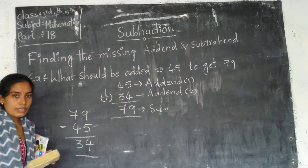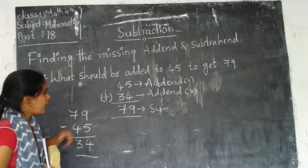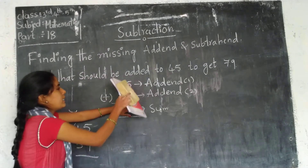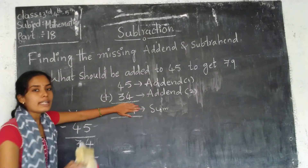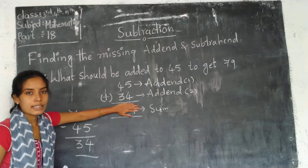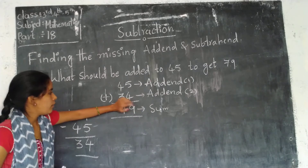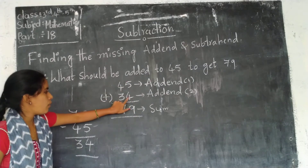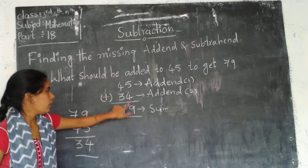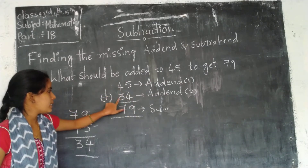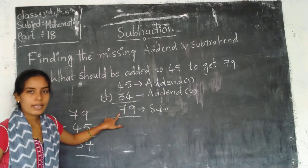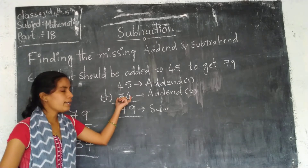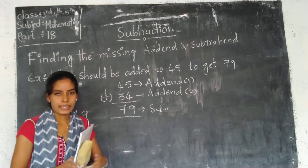Is that correct? How can we check? We add 45 plus 34: 5 plus 4 is 9, and 4 plus 3 is 7. So our missing addend of 34 is correct.